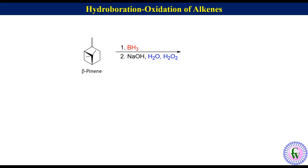Hydroboration oxidation of beta-pinene: OH will add to the methylene carbon while H adds to the tetrasubstituted alkenic carbon. There are two faces of the alkene. The top face is sterically hindered due to the methyl group, so attack will preferentially occur from the bottom face to produce cis-myrtanol.